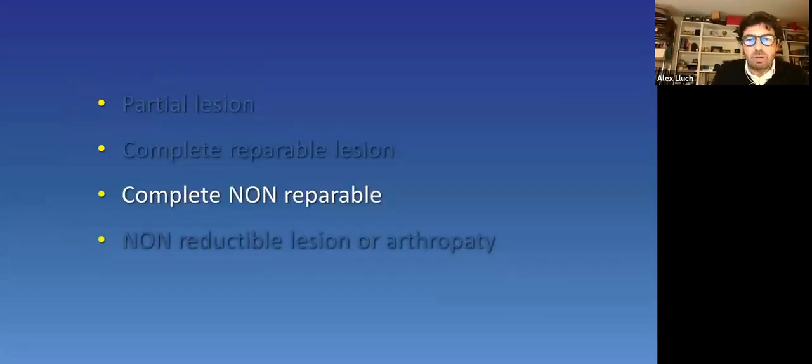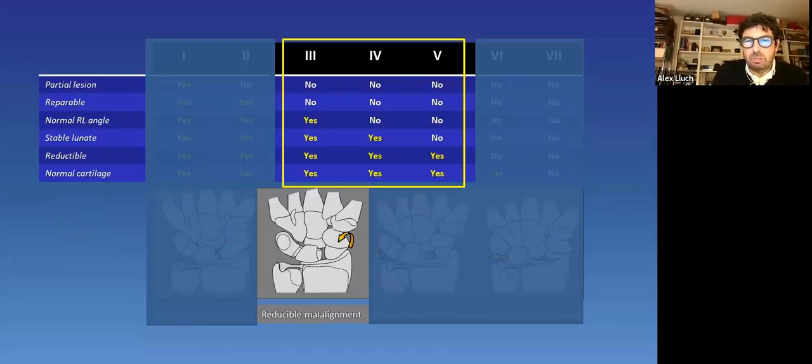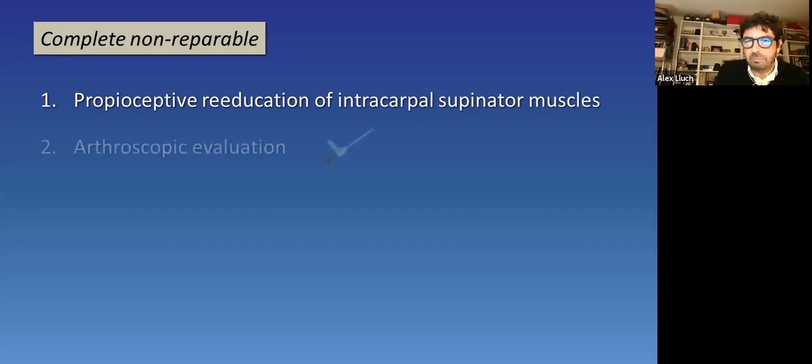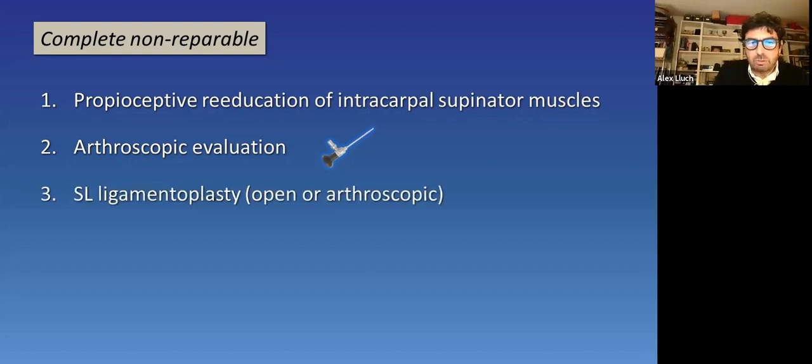What to do in a complete non-reparable ligament. This brings us to different situations, but all of them in a stage of reducible instability. So this will be the stage of probably more instability. In any case, treatment will start with a preoperative period on muscle training. Even if surgery has to be scheduled later, learning how to contract and use intracarpal supinators is beneficial. As knee surgeons do right now with anterior cruciate ligaments, they rehab the patient before the surgery, even though they know they have to do the surgery with the patient. An arthroscopic evaluation allows to examine the lesion and evaluation of the cartilage. And followed by a ligament reconstruction, a ligamentoplasty that can be open or with arthroscopic support.